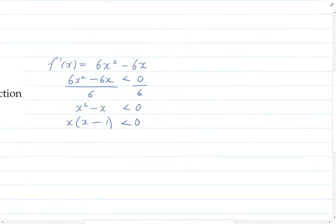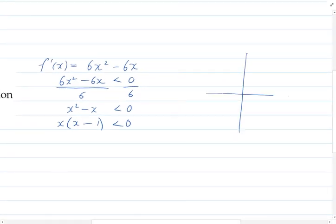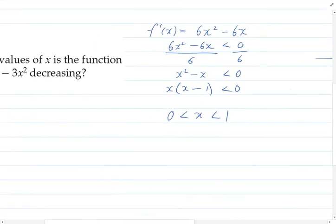So I'm just going to do a tiny little sketch on the side here and draw out that graph. It's going to look something like this, where it intercepts the x-axis at those two points. So since we've factorized it, we can see that those two points are zero and one. And so our graph is going to be below zero between those points.